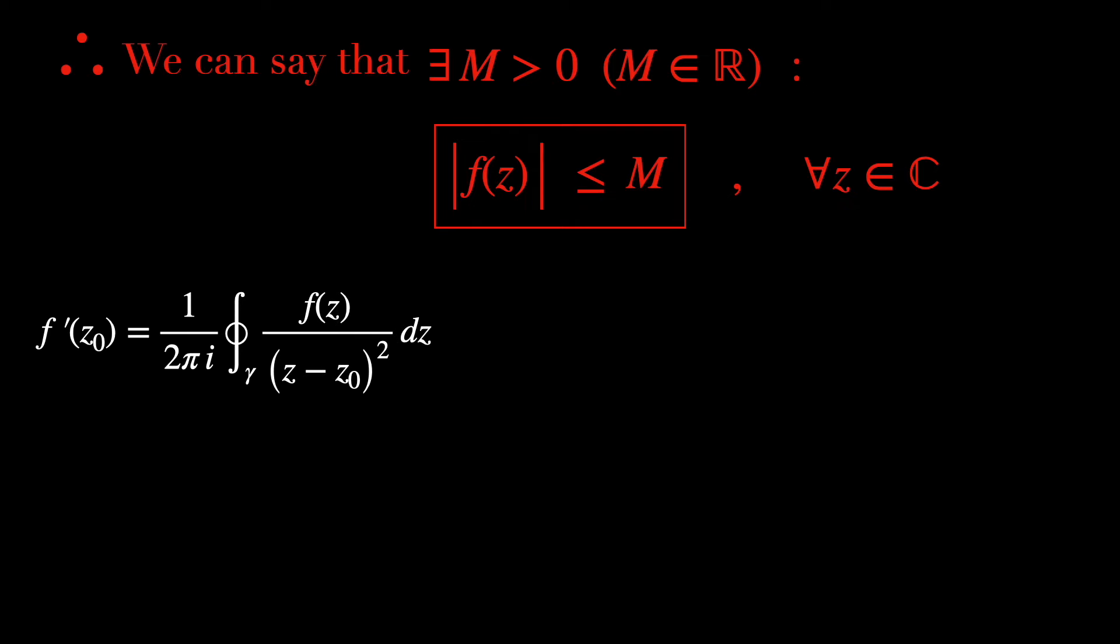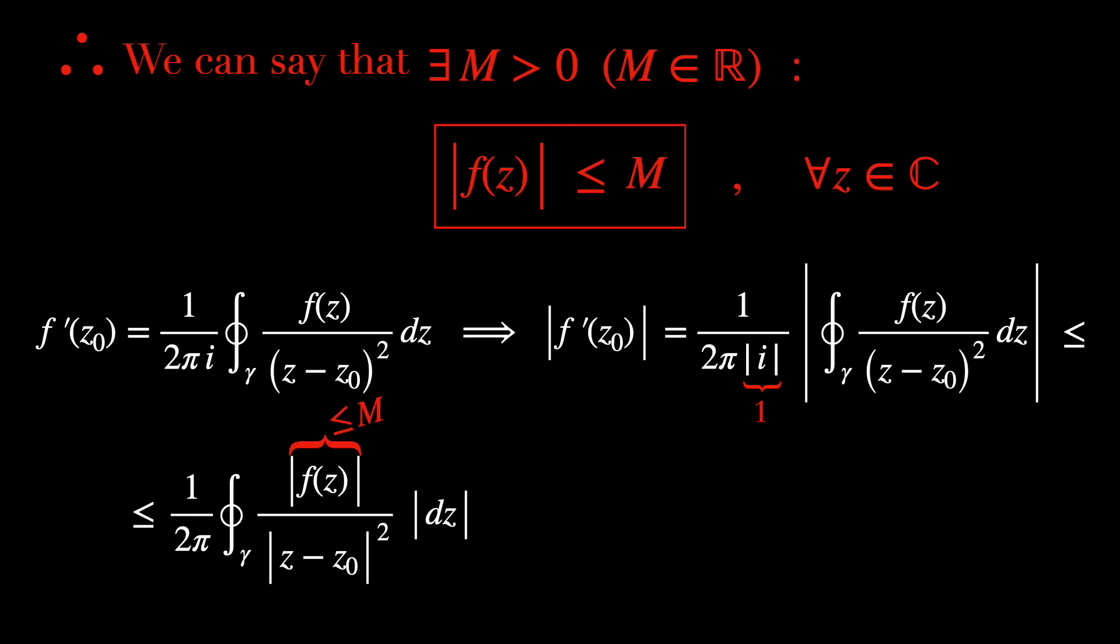So from Cauchy's integral formula for the derivative, we can take the absolute value in both sides and see that the absolute value of i is going to be 1 and the absolute value of this integral is less or equal than the following, just using triangle inequality. We notice that the module of f(z) is less or equal than m, as we just said. So this is going to be less or equal than m/(2πr²) of the integral of the module of dz. So the absolute value of the derivative of f(z0) is less or equal than m/(2πr²) integral over gamma of |dz|.